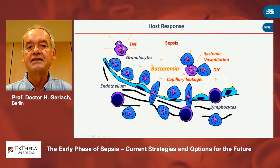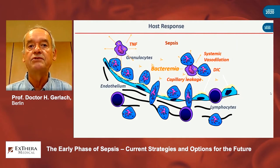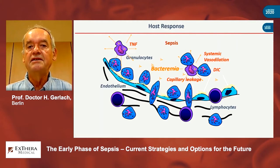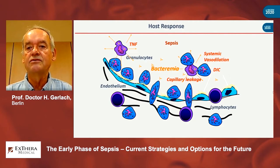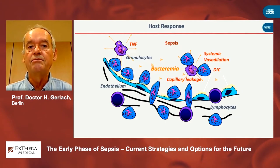However, in sepsis we do not always have a localized primary focus. We very often have systemic bacteremia. This means that this endothelitis is happening throughout the whole body, and whereas the consequences in local inflammation are compartmentalized, the systemic reaction is over the whole body.